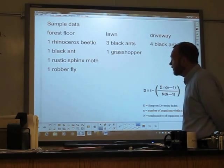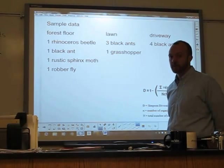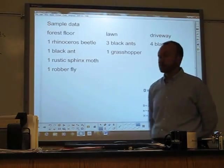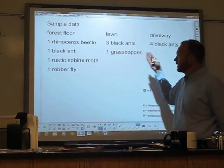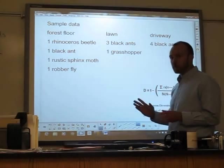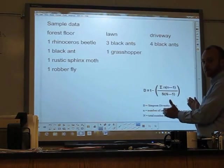For the purposes of example though, I have intentionally chosen simplified numbers. So for my example, in each of my locations I have captured four insects. I want to use this to explain what the Simpson Diversity Index does and how it shows you a measure of biodiversity.